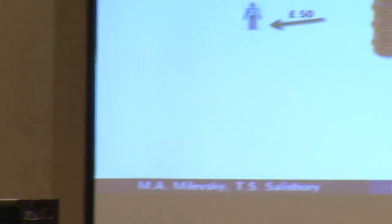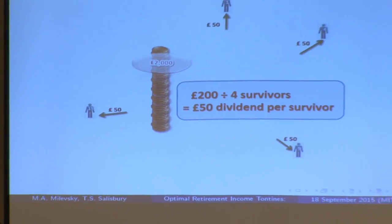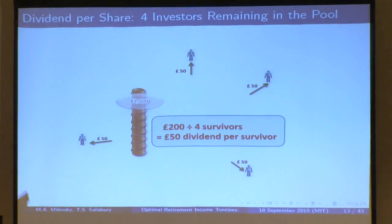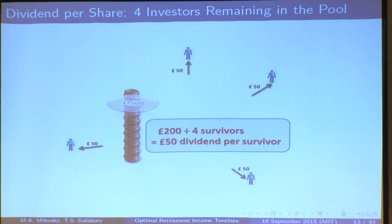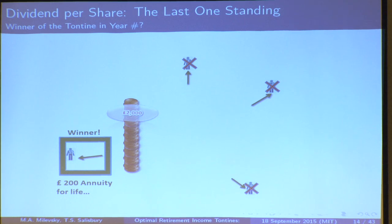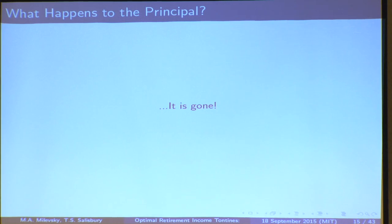What happens at the very end? Imagine there are four people left — they're going to get 50 pounds each, so the majority of their payments are really mortality credits. What happens when there are four people left? Obviously one of them knocks off the other three, and we're left with the winner of the tontine who gets 200 pounds for life — until he or she passes away, and then it's over. No more payment, no principal, no bequest, no legacy. What happens to the original principal? It's gone. But this has been amortized — you did get your principal back, it was split across.